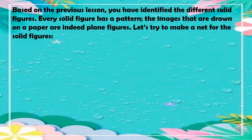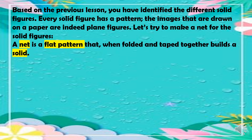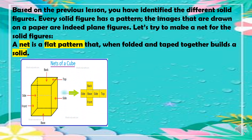Based on the previous lesson, you have identified the different solid figures. Every solid figure has a pattern — the images drawn on paper are plane figures. Let's try to make a net for the solid figures. A net is a flat pattern that, when folded and taped together, builds a solid. For example, we have the net of a cube — you can follow these steps or use this net to make a cube.